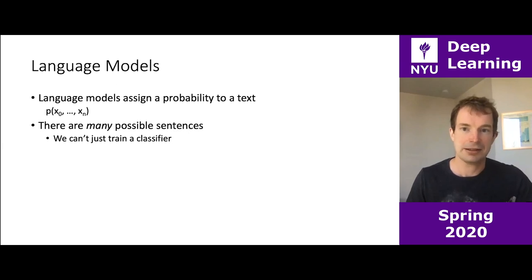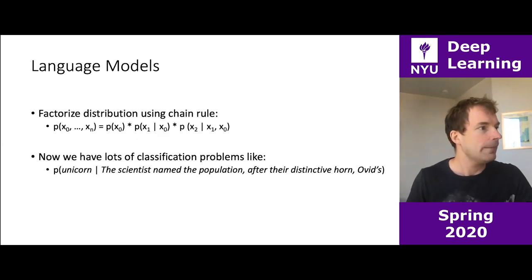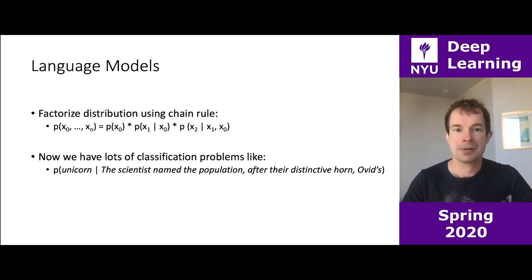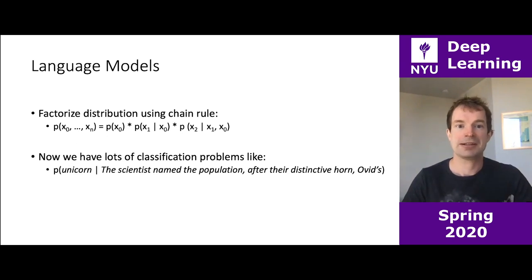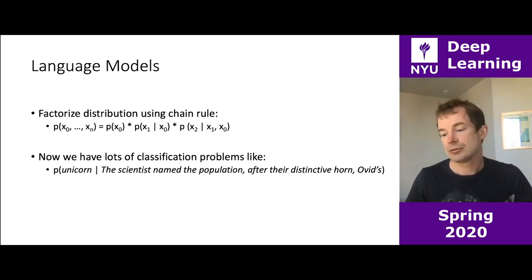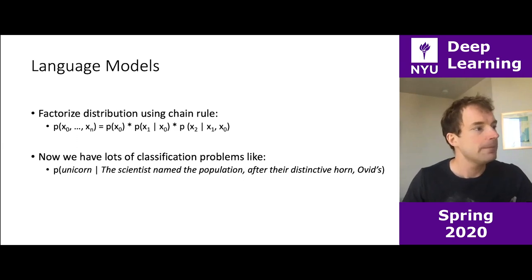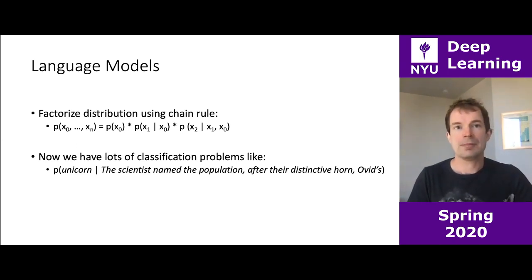There are quite a lot of possible sentences — exponentially many — so we can't just use classifiers directly. The approach that's most popularly used is to factorize the distribution using the chain rule. We're going to predict the first word, then predict the second word given the first, the third given the previous two. This is an exact factorization — it doesn't cost us anything. We've really turned this density estimation problem into a series of classification problems: given a bunch of text, predict the next word.